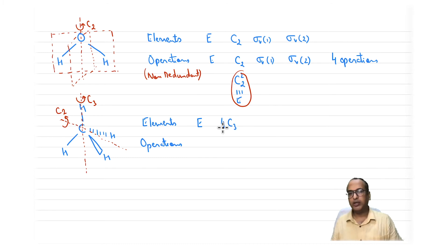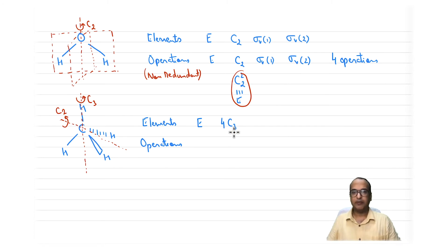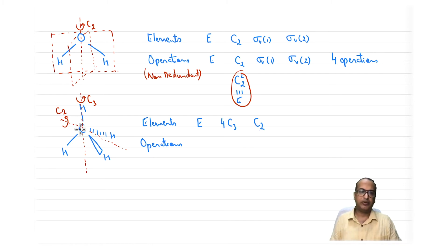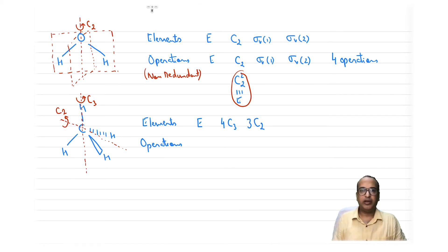Since all four C3 axes are equivalent — because all C–H bonds are equal — we write them together as four C3. For C2 axes, which bisect H–C–H angles: we need to count how many such axes are present. There will be three such C2 axes.